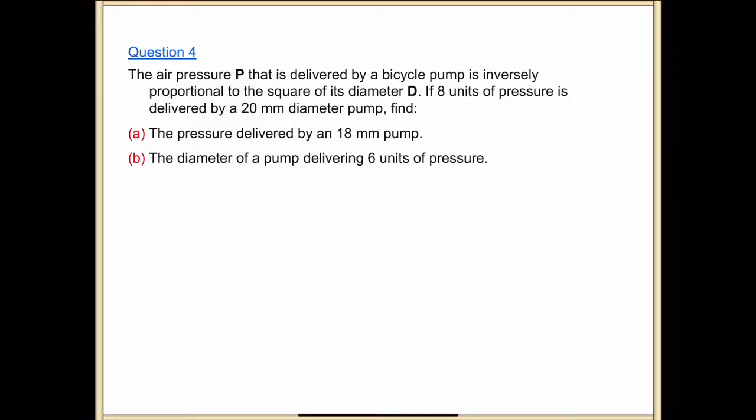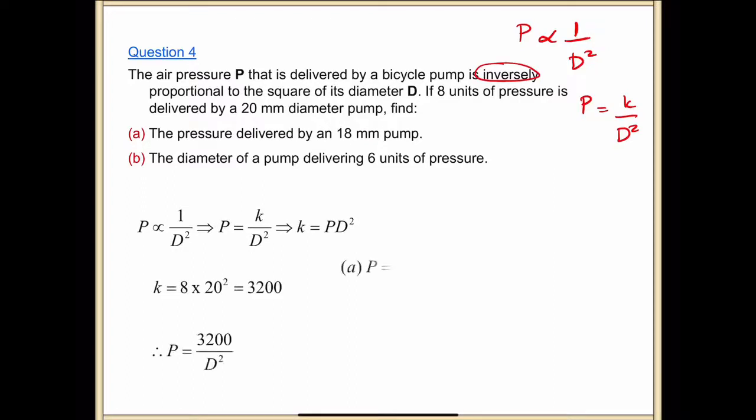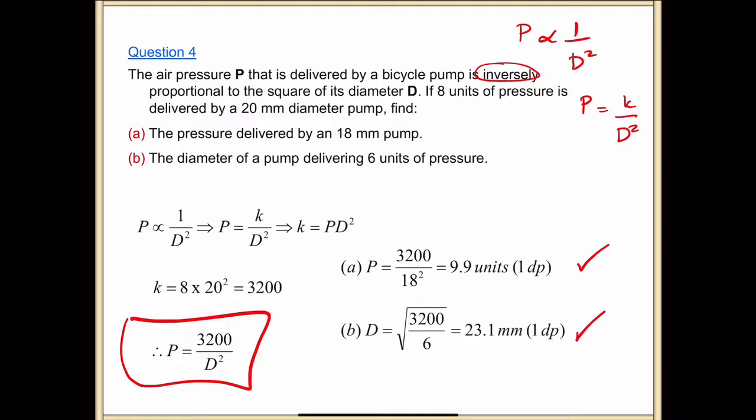Question 4. The air pressure delivered by a bicycle pump is inversely proportional to the square of its diameter. Pressure is inversely proportional to the square of its diameter. So pressure equals k over d squared. Why is it k over? Because it's the key word: inversely. Relationship, answer, and answer. Mark, mark, and obviously mark for the relationship.